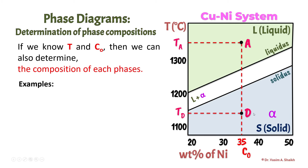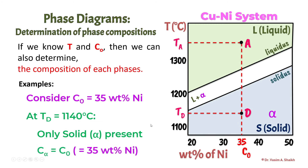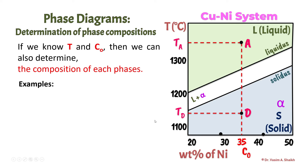Moving on to the next example — suppose we take point D. The original composition is again 35 weight percent nickel, and the temperature at point D, if you draw a horizontal line, is around 1140 degrees Celsius. It is below the solidus line, so the entire phase is a solid phase, or alpha phase. The original composition is again equal to the composition of the alpha phase — 35 weight percent nickel. It is easy when we have one phase.